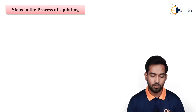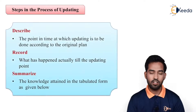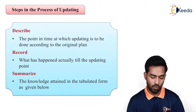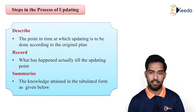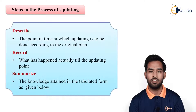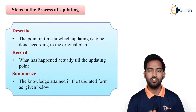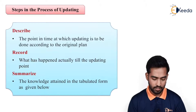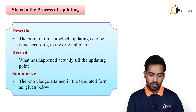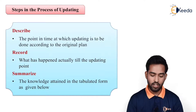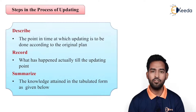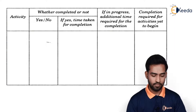Now, the actual steps in the process of updating. First is 'describe': identify the point in time at which updating is to be done according to the original plan. Then 'record': what has happened actually till the updating point — all this record we have to maintain. Then 'summarize': the knowledge is entered in tabulated form using a specific table. We have to fill all the necessary data in this form, such as the activities going on, whether they are completed or not.